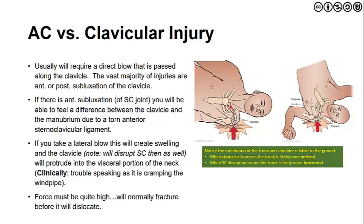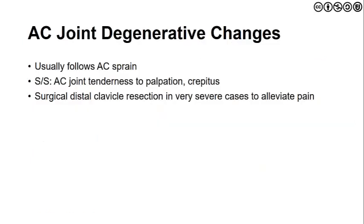Trunk orientation differs between fracture and SC disruption: when the clavicle fractures, the trunk is more vertical and the arm outstretches; with SC disruption, the trunk is more horizontal, more perpendicular to the force. While micro and macrotrauma are the biggest issues, atraumatic or degenerative changes are seen as well, though these typically follow an AC sprain. Signs and symptoms include AC joint tenderness on palpation and even crepitus. Only in severe cases will they choose to resect the joint.